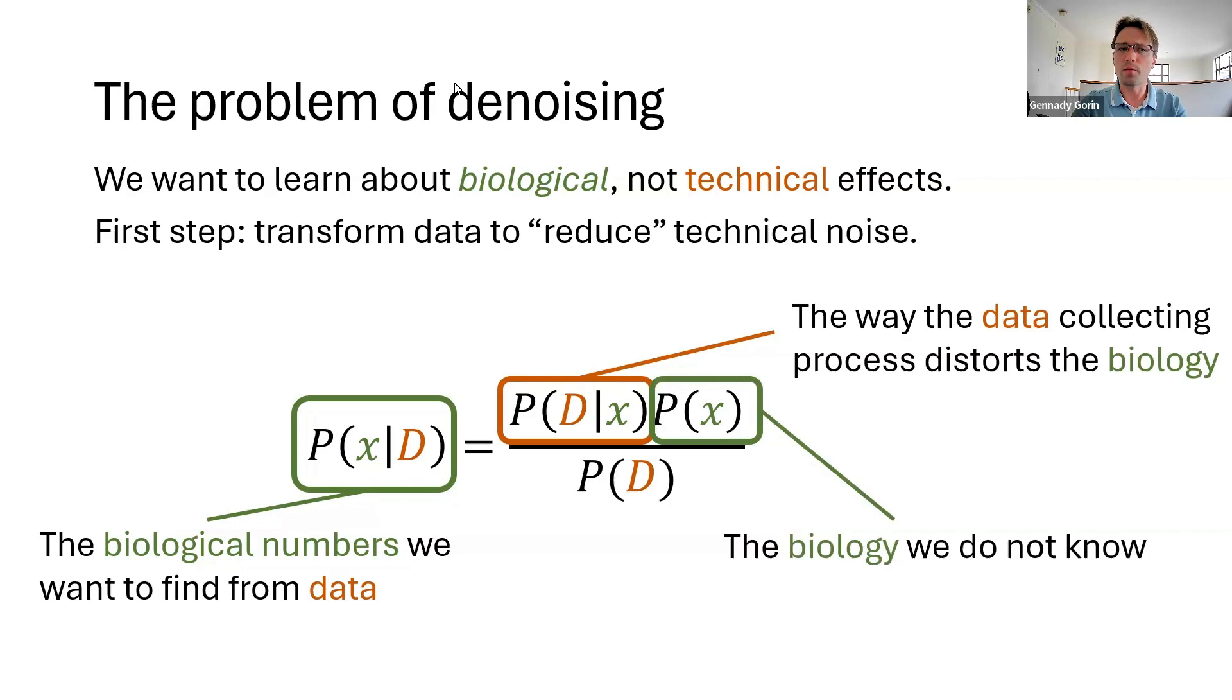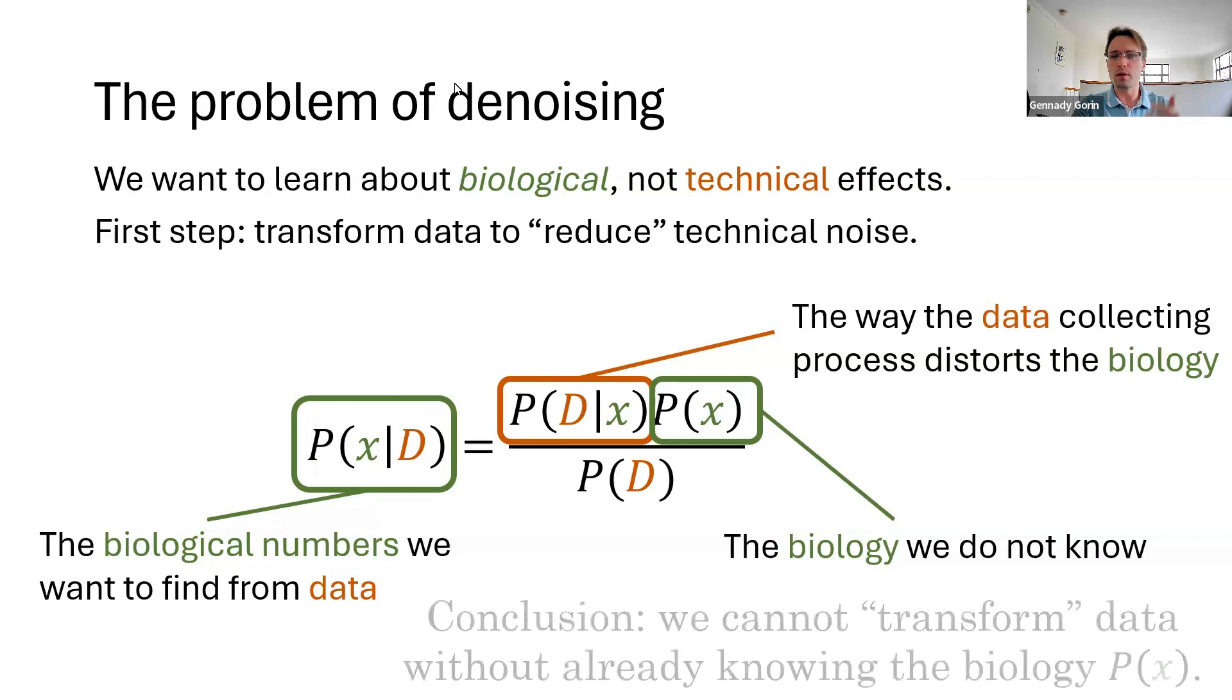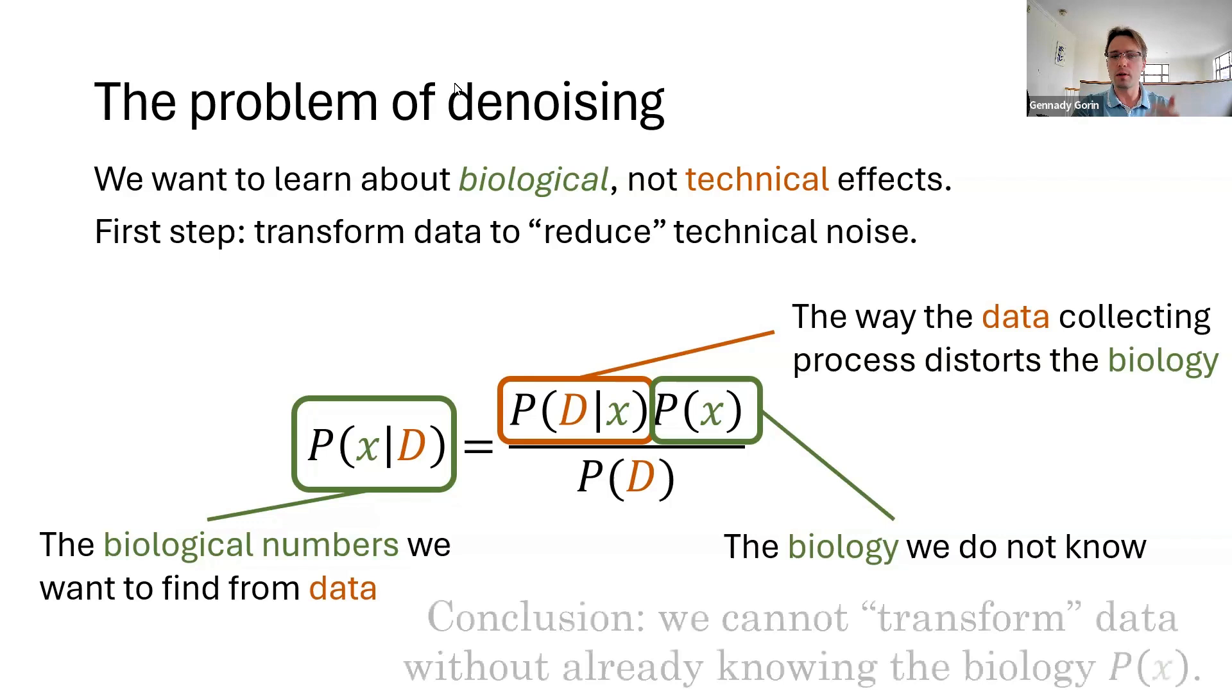And this should seem concerning because we don't know what the subject is. We're trying to learn about it. So, we have to start by writing down some model of biology that governs P(X) to figure out which part of the variability is biological and whether we can even hope to deconvolve it from the technical noise.